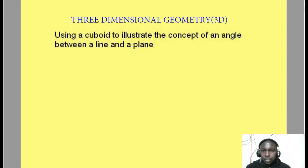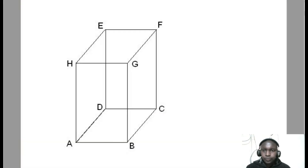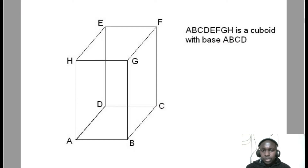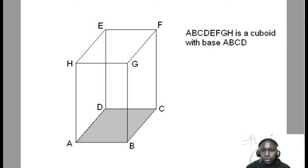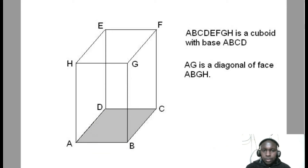Three-dimensional geometry. In this lesson you are going to use a cuboid to illustrate the concept of the angle between a line and a plane. You are going to use this cuboid with ABCD as the base, and we begin by drawing this diagonal.